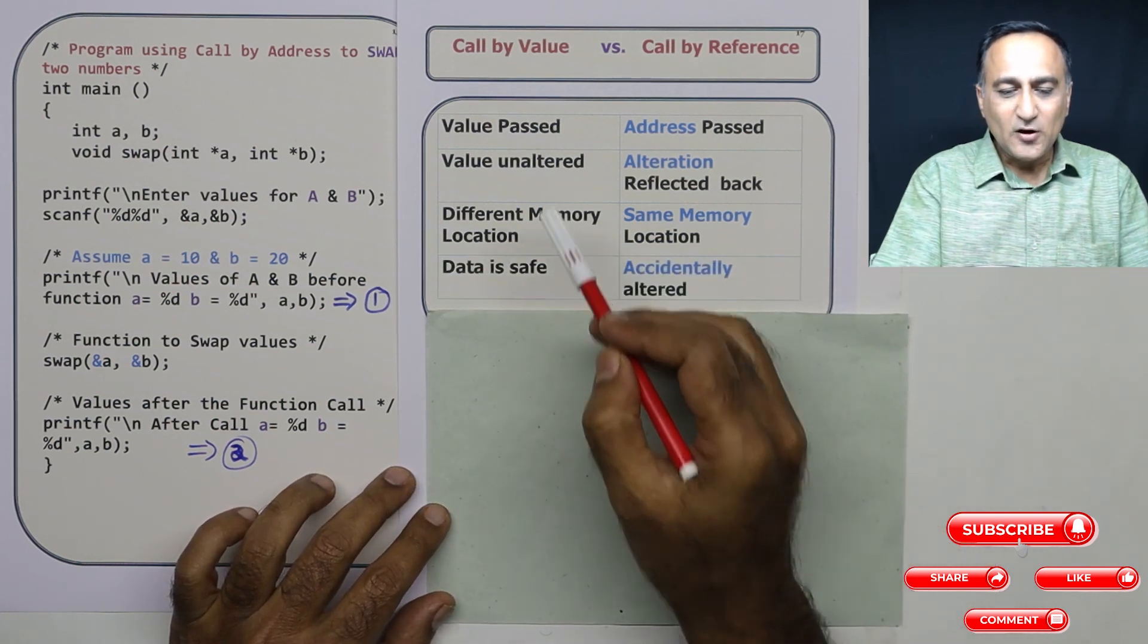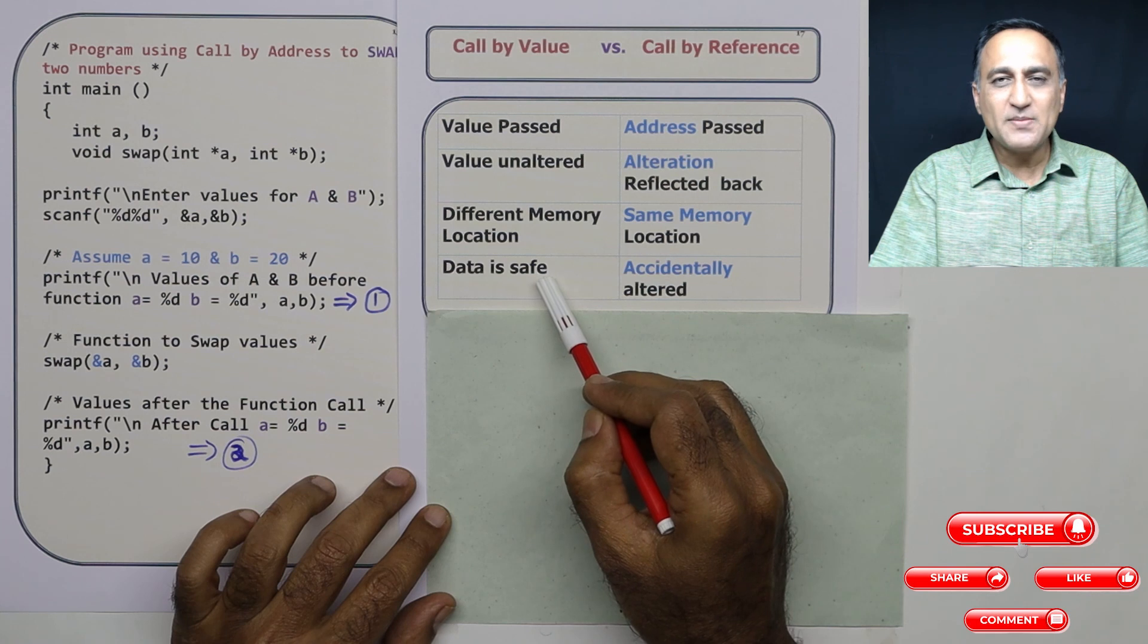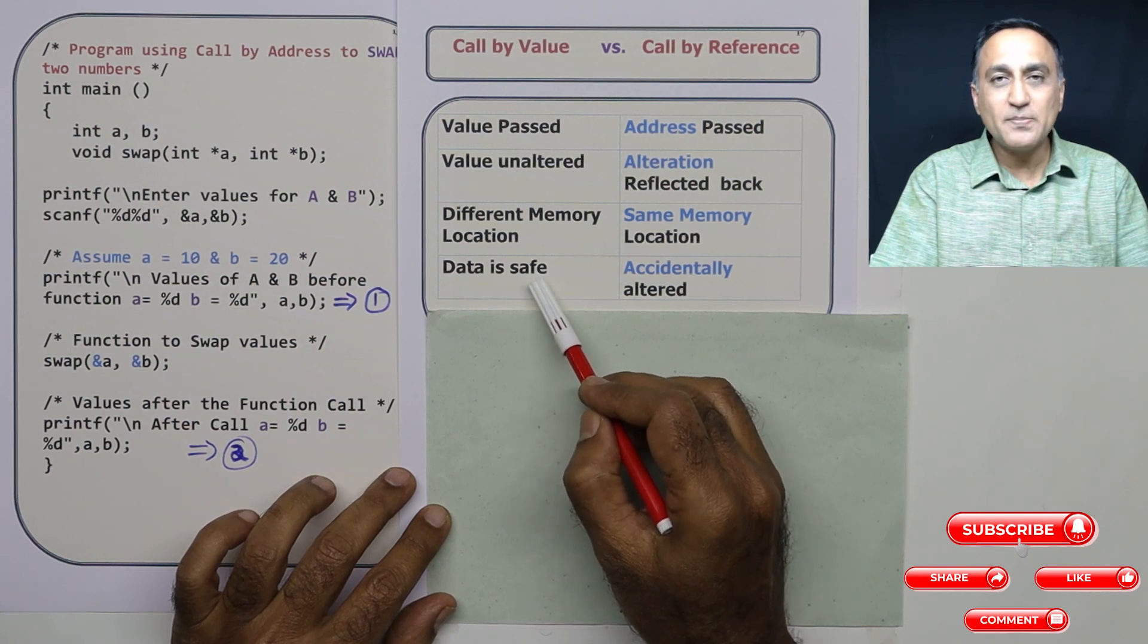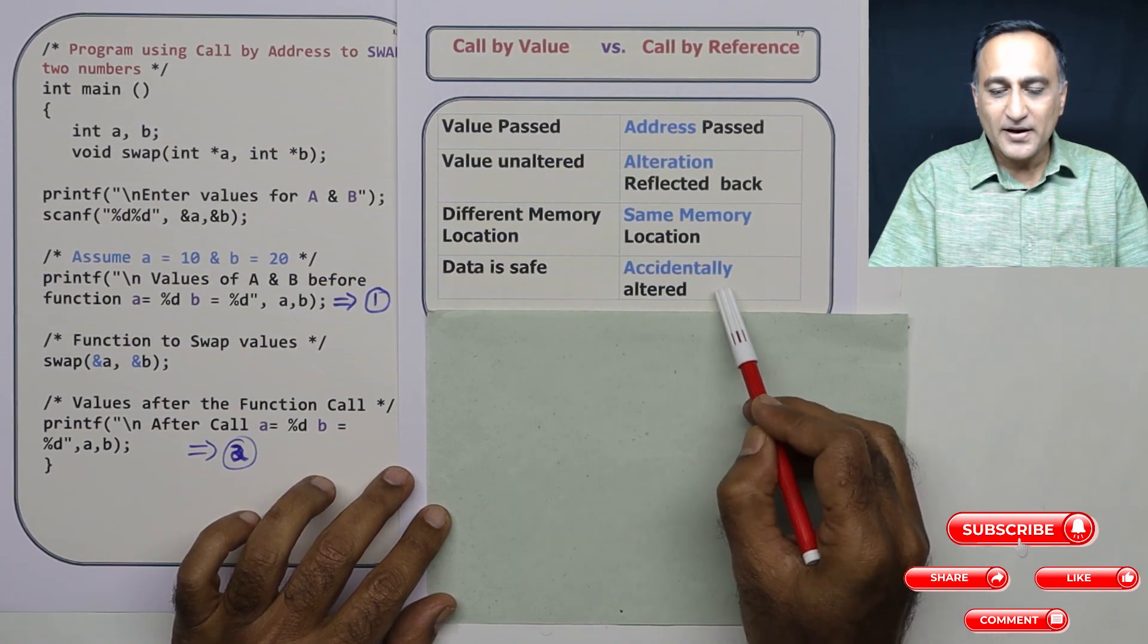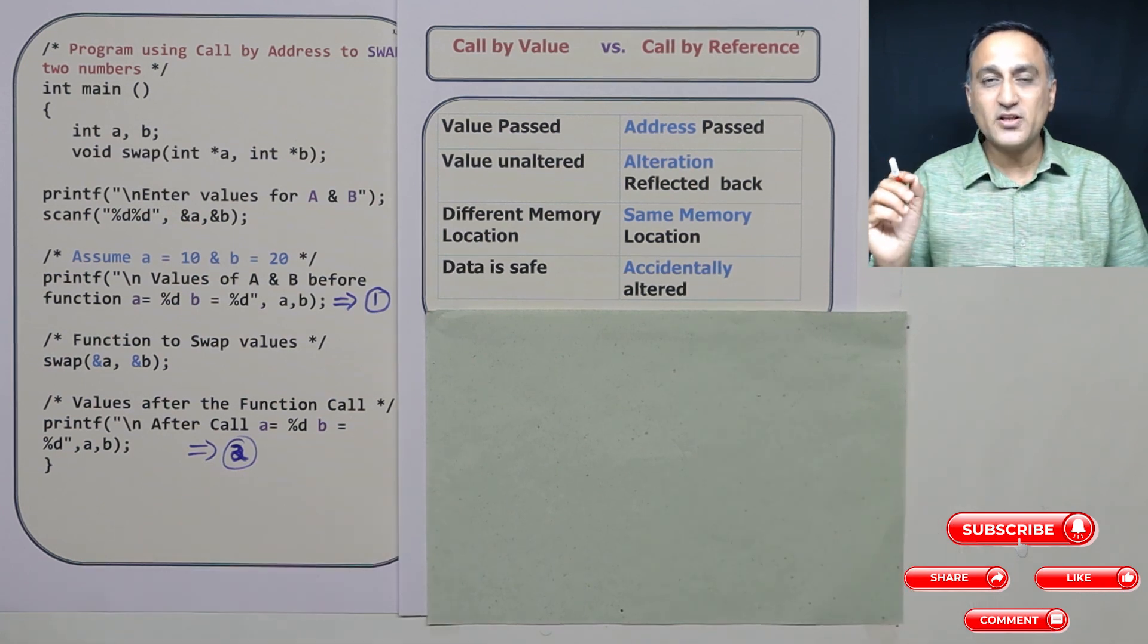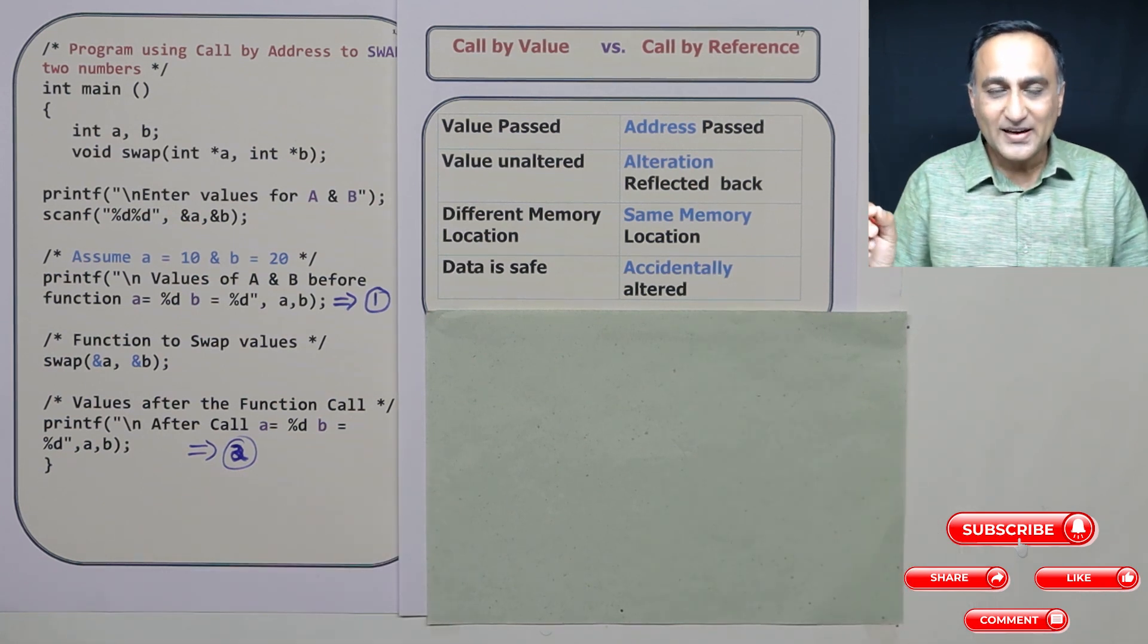Finally, in call by value, you cannot make any mistake of losing the data because you're only passing a copy. In call by reference or call by address, you can destroy the original value if you are not careful.